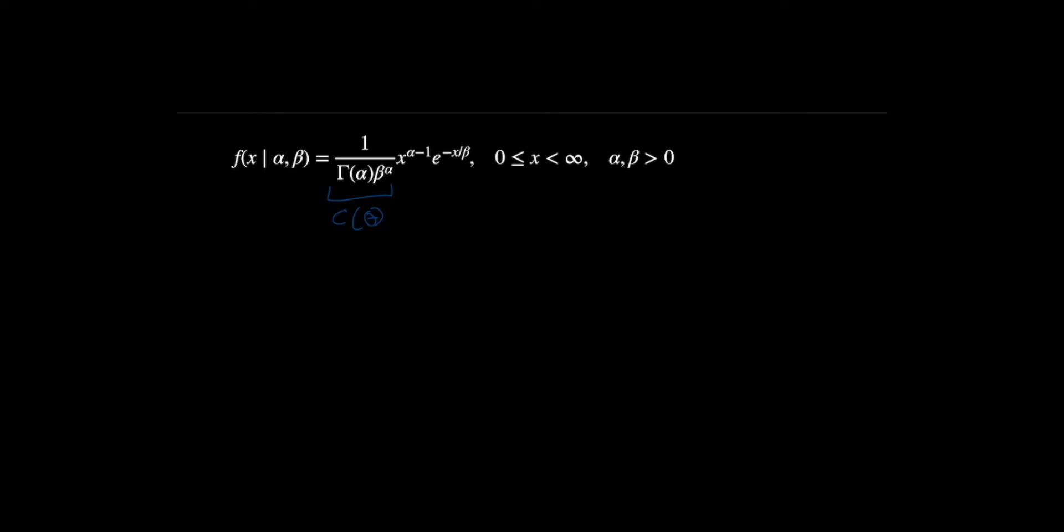this term here, it's mixed with our X value and our parameter values. We need to be able to write H of X by itself without having them being mixed together. So we're going to do a trick, and that trick is based off of this: